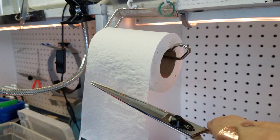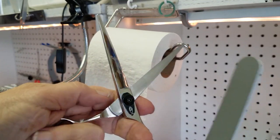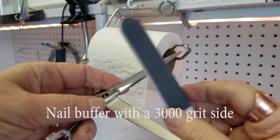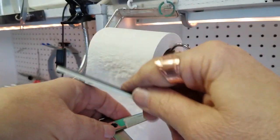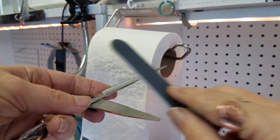This is where the nail buffer comes in. This is a very smooth nail buffer, 3,000 grit on one side. That's the side we're using and it's very soft, less pressure than what you would use on your fingernails.